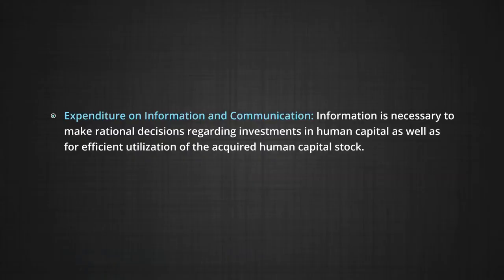Expenditure on information and communication: expenditure is incurred to acquire information relating to labor markets and other markets. It involves amounts spent on enhancing information and communication technology and making technology resources available in remote areas at an affordable cost. For example, people want to know the salary levels and entitlements associated with various types of jobs, and whether educational institutes provide the right type of employable skills. Information is necessary to make rational decisions regarding investments in human capital as well as for efficient utilization of acquired human capital stock.